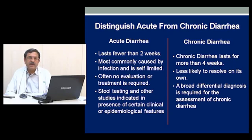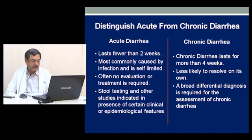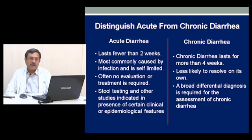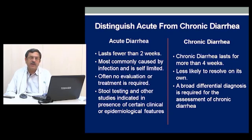We must be aware that acute diarrhea can be viral — rotavirus, Norwalk virus and Norwalk-like viruses — or protozoal. Acute diarrhea can also be caused by bacterial infections with pre-formed toxins, like Staphylococcus, E. coli, and Vibrio cholerae. Most of these are self-limiting, apart from cholera where one has to give fluids to combat fluid loss. Chronic diarrhea, lasting more than 4 weeks, is less likely to resolve spontaneously. A broad differential diagnosis is required, including cytomegalovirus, Clostridium difficile, Shigella, Salmonella, E. coli, and Campylobacter jejuni as common bacterial causes.